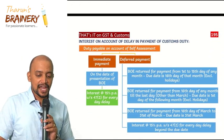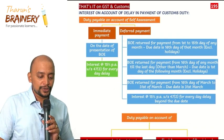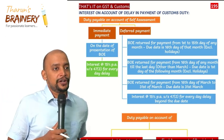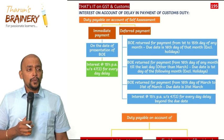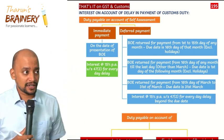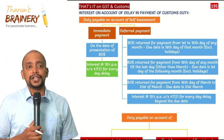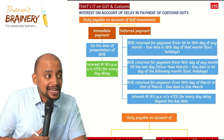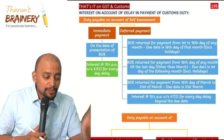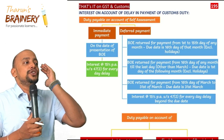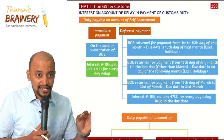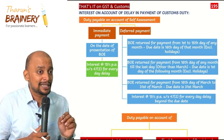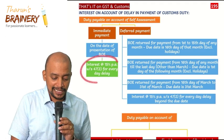Now we look at interest on account of delay in payment of customs duty. Once self-assessment is completed, the customs duty must be paid on the same day the bill of entry is acknowledged — that is, the date of presentation. If payment is not made on that day, interest is payable at the rate of 15% per annum for every day of delay.